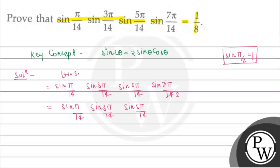Now we convert the sine terms into cosine. We know that sin(π/2 − θ) = cos(θ), so sin(π/14) = cos(4π/7), sin(3π/14) = cos(2π/7), and sin(5π/14) = cos(π/7).